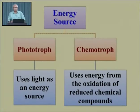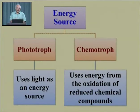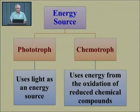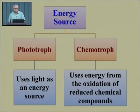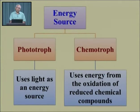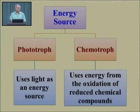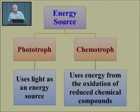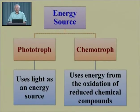Looking at the overall classification chart in detail: phototrophs use light as an energy source, while chemotrophs use the energy from oxidation of reduced chemical compounds. Phototrophic organisms directly utilize sunlight or light as their energy source. Microorganisms have the capability to utilize simple compounds for growth and activity that higher organisms including plants, humans, and animals do not possess.